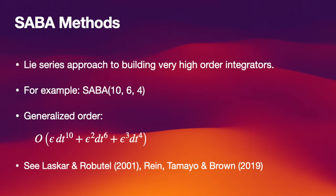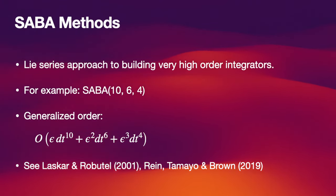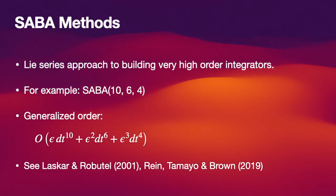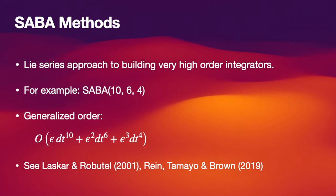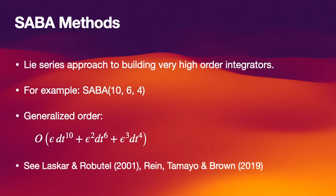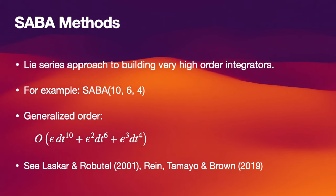Now there's an additional type of high order method implemented in rebound that makes use of WHFAST in the background. They're called the Saba methods. The Saba methods make use of a Lie series approach, so it's a slightly different way of interpreting the different operators. One of the really standout methods is Saba 10, 6, 4. This method has a generalized order of 10, 6, 4, which means it's 10th order in dt with an epsilon in front, and then 6th order in dt with an epsilon squared in front, and 4th order with an epsilon cubed in front.